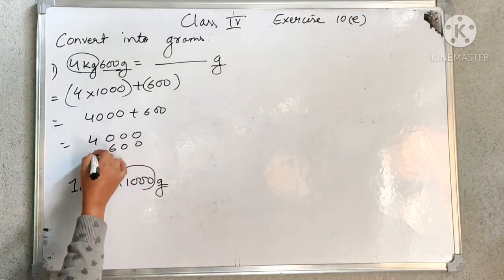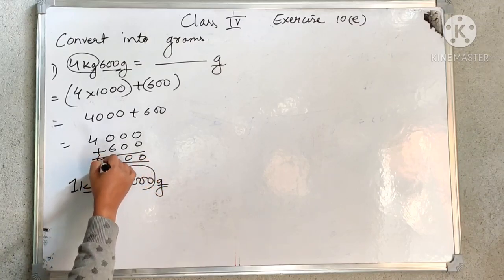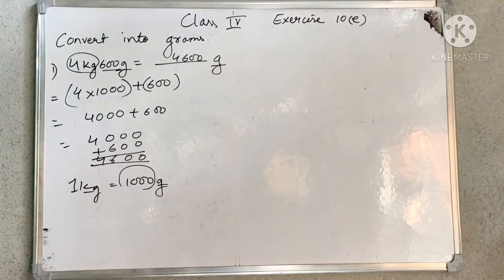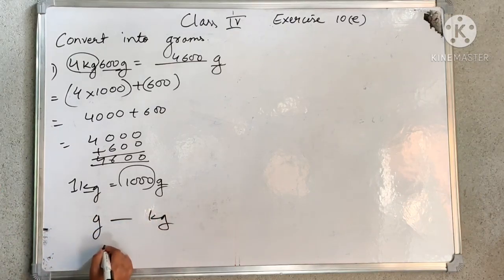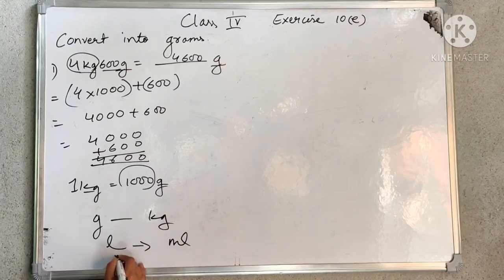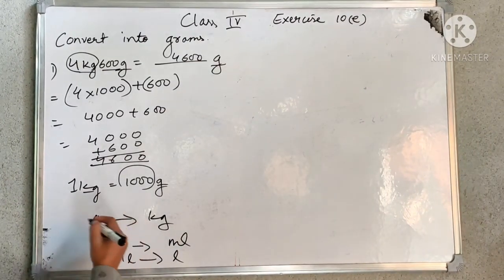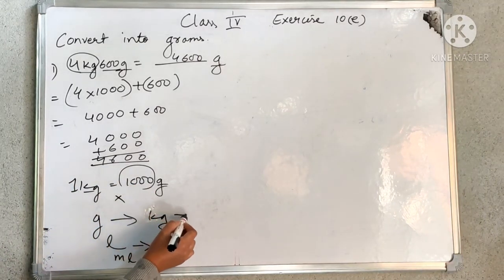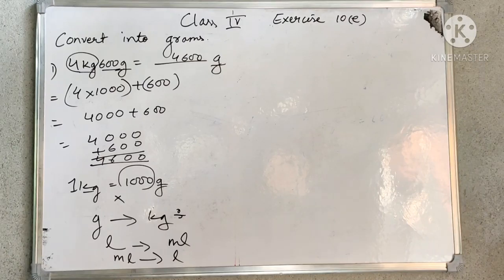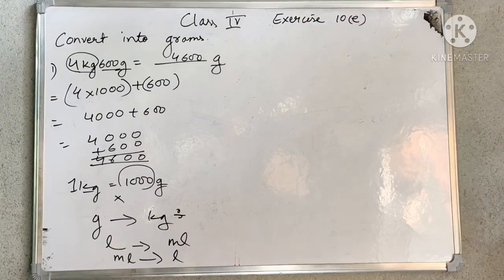If you get confused, you can arrange it in a column method and then solve it. In this way you have to convert. Whether it is gram to kilogram, litre to millilitre — the rules are always the same. You need to see whether you are converting big to small or small to big. If it is big to small, you multiply; small to big you have to divide — by the relation they have, whether it will be 1000, 100, or 10, depending on the relation between the two units.